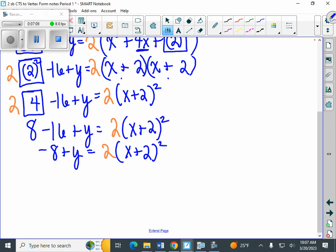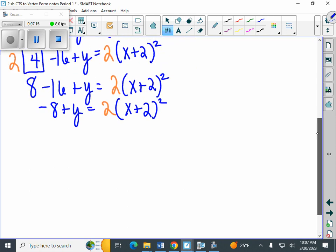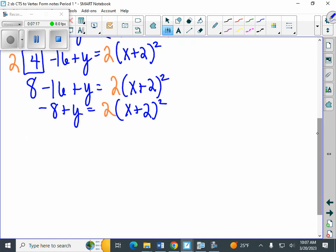And again, we're at the point where we're solving for y. We're going to get an equation, not a numerical answer. But all that we need to do to finish is we need to add 8 to both sides. So here comes the vertex form. y equals 2 times x plus 2 squared plus 8.